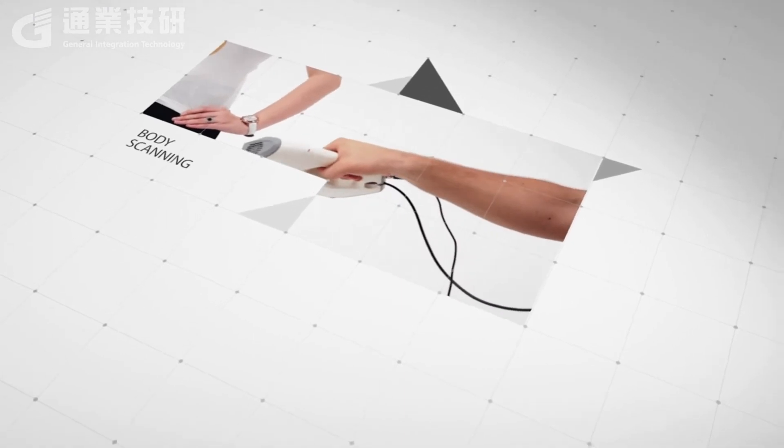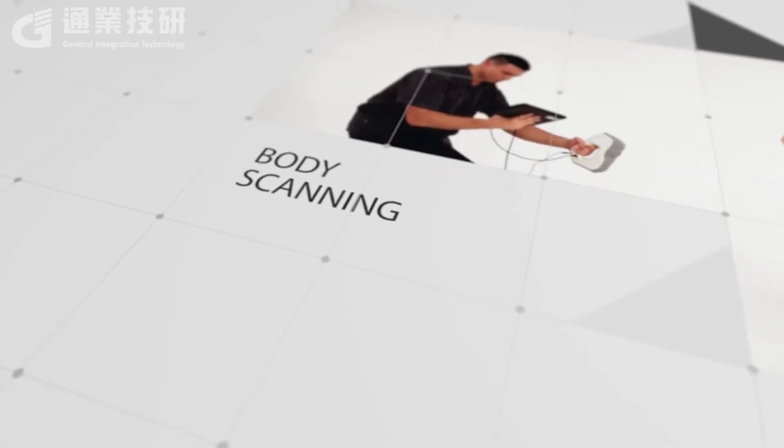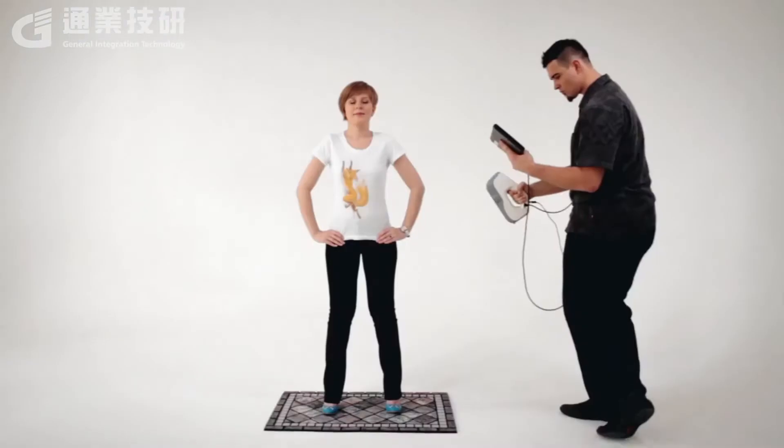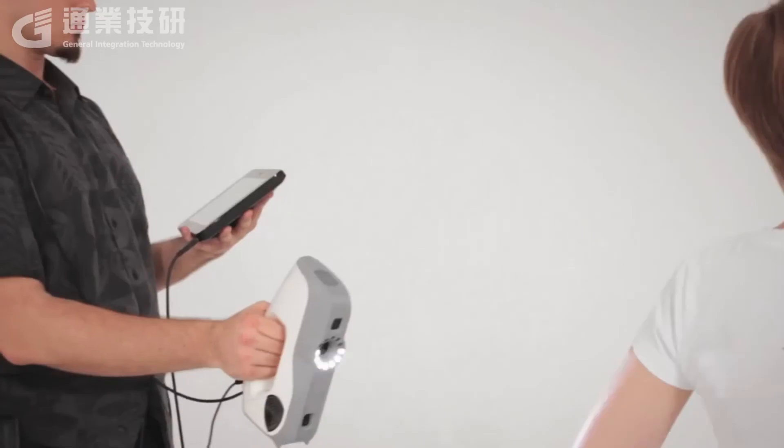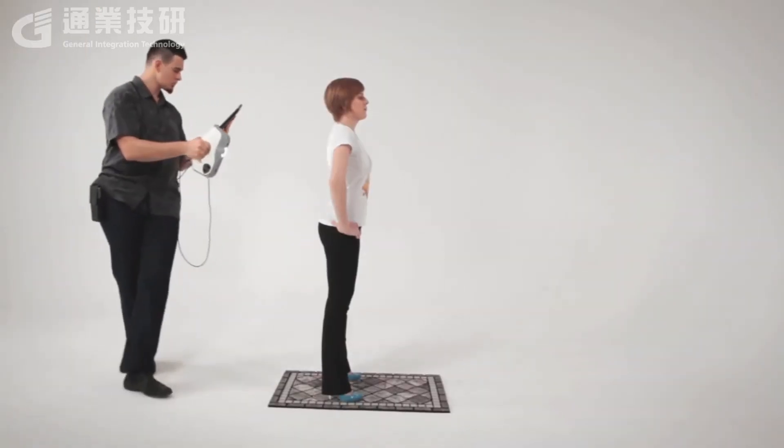Scanning the body is easy, as long as you meet a few simple conditions. Scanning the body is much like scanning the head. First, you scan the front of the torso, then the side, then the back, and then the other side.